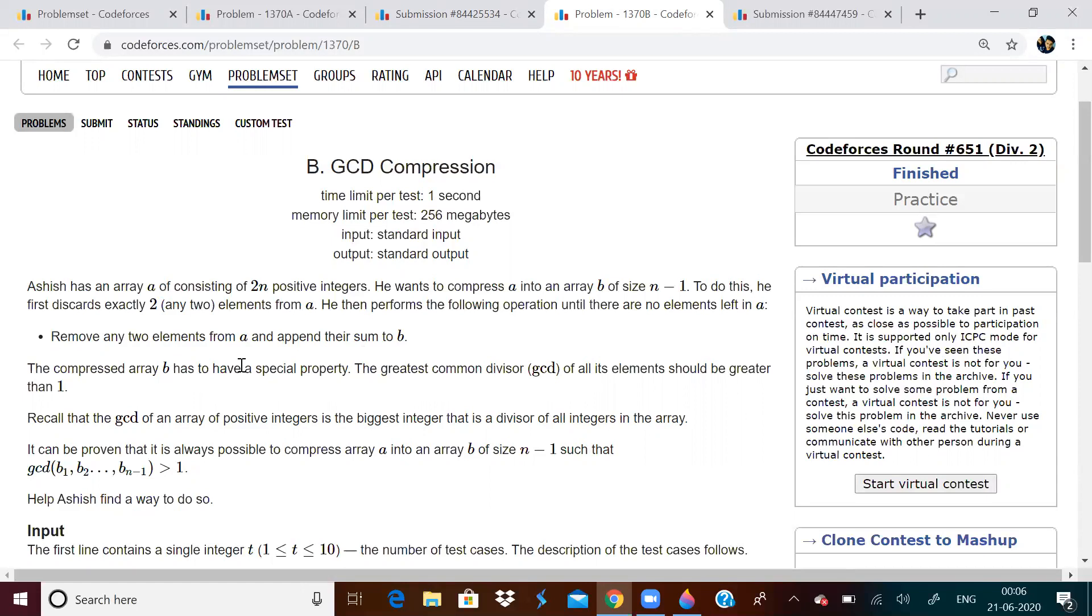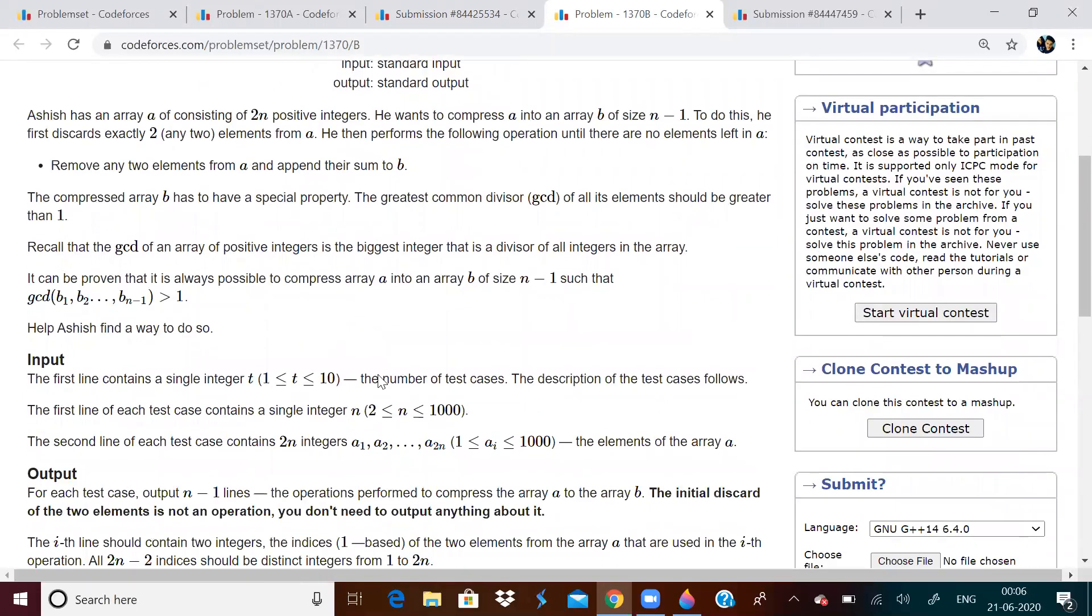So after you form array B, it should be formed in such a way that the GCD of all elements in array B is greater than 1. How to form array B? First of all, remove 2 elements, and after that remove 2 elements from A and then append the sum.